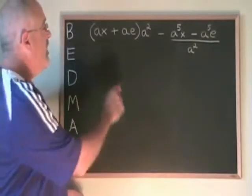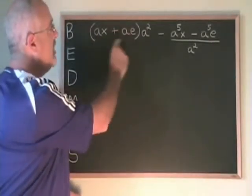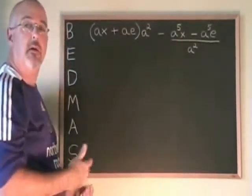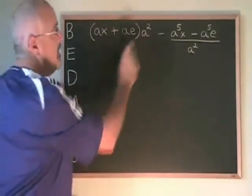In our next example, we have a multiplication of the bracket with the a squared, and we have a giant fraction, which is really a division, with a minus sign before it.